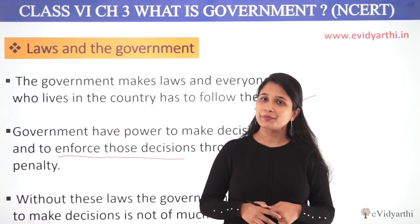Now we have talked about which level of government operates where. What we see is that any law we have talked about is implemented through the court. So what will happen in the court? The law is implemented. The government makes law, and everyone who lives in the country has to follow the law.